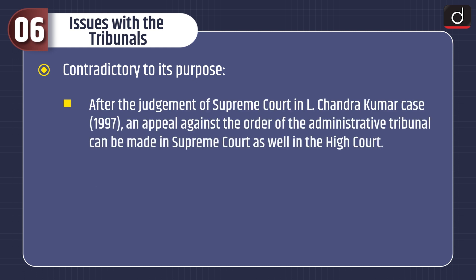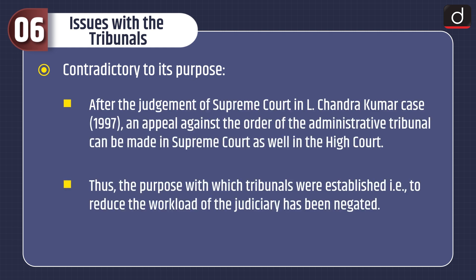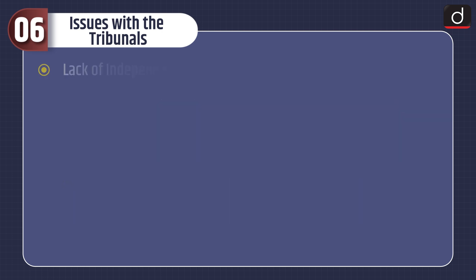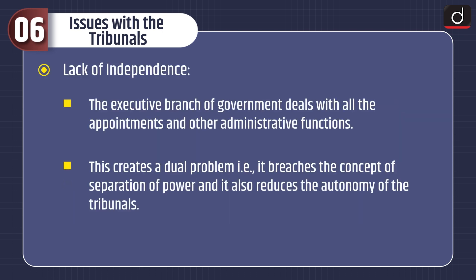Fourth, Contradictory to its Purpose: after the judgment of the Supreme Court in the L. Chandra Kumar case, 1997, an appeal against the order of the administrative tribunal can be made in the Supreme Court as well as in the High Court. Thus, the purpose with which tribunals were established — to reduce the workload of the judiciary — has been negated. Fifth, Lack of Independence: the executive branch of government deals with all the appointments and other administrative functions, which breaches the concept of separation of power and also reduces the autonomy of the tribunals.